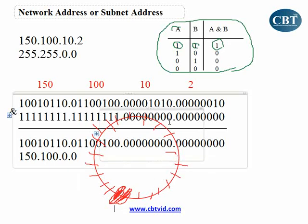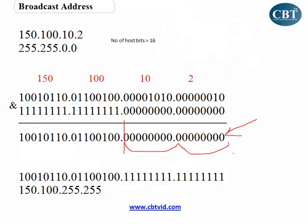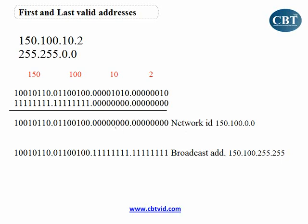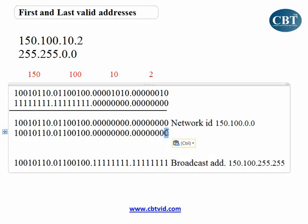So, what is exactly the first valid address that I can use, and the last one? The first valid address is exactly the first address after the network address, and the last valid address is the address exactly before the broadcast address. Here is my network address and here is my broadcast address. If I want to find out my first address, I just have to add one to this address. When I add one, this last bit becomes one, so the first valid IP address will be 150.100.0.1.